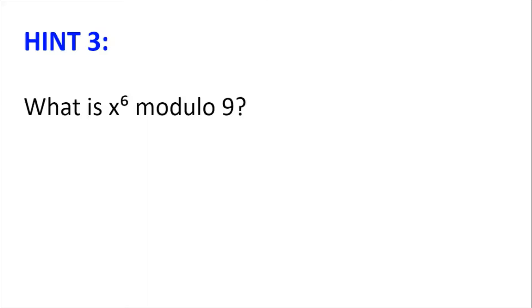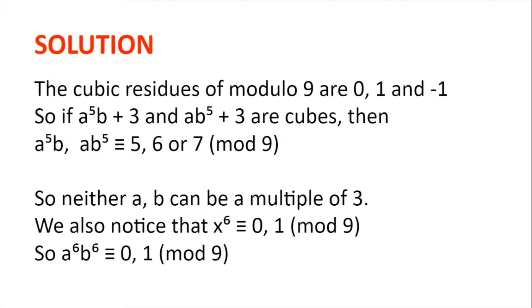What is a to the power of 5b multiplied by ab to the power of 5? The cubic residues of modulo 9 are 0, 1, and minus 1. So if a to the power of 5b plus 3 and ab to the power of 5 plus 3 are cubes, then a to the power of 5b, ab to the power of 5 equals 5, 6, or 7 in modulo 9.